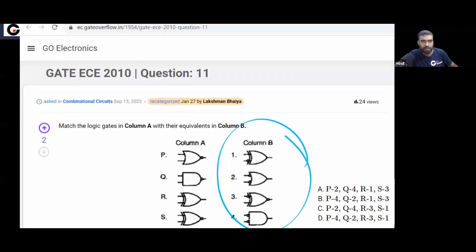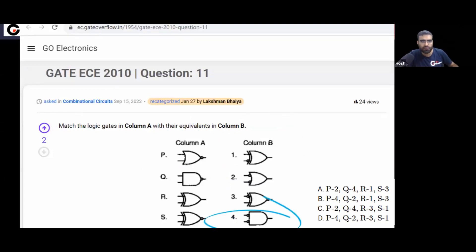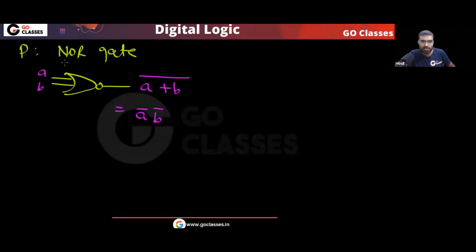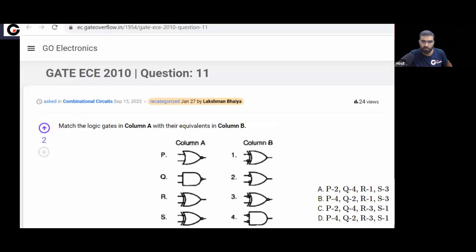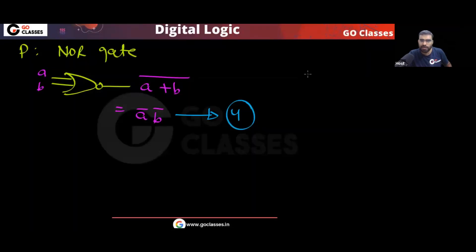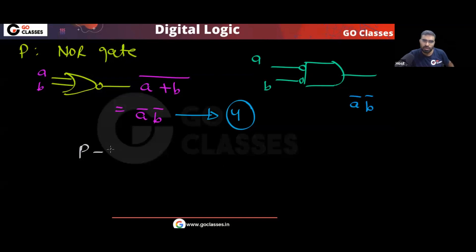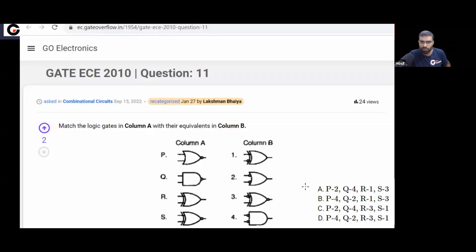Now in column B, which gate is equivalent to the NOR gate? You can see option 4 — that is Ā·B̄ (A bar AND B bar). It's an AND gate with bubbles on the inputs before it, which means it equals Ā·B̄. So P will match with 4. That eliminates options A and C.